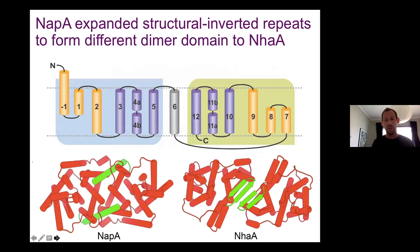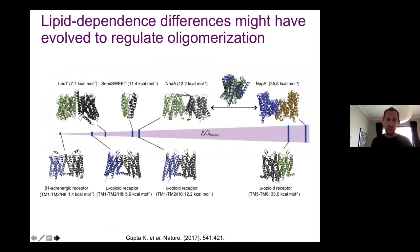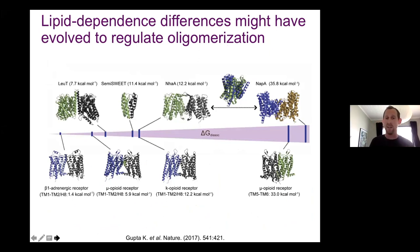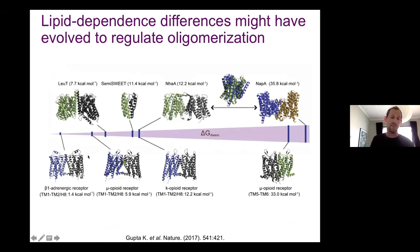Evolutionarily, these two proteins looked the same but evolved a different dimerization interface - one was dependent on cardiolipin, one wasn't. The idea is that interfaces that are weaker become more dependent on lipids for organization, and that might be a way to regulate activity through oligomerization, whereas interfaces that are more protein-mediated are less lipid sensitive.